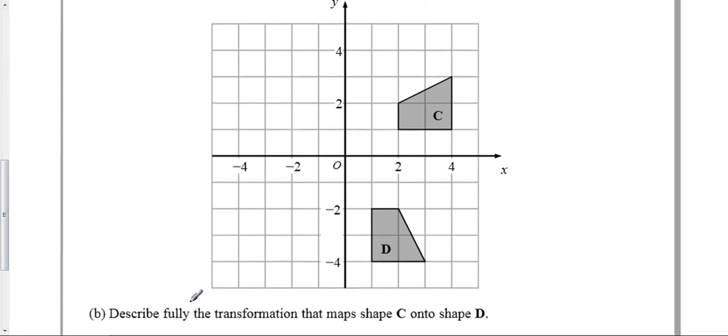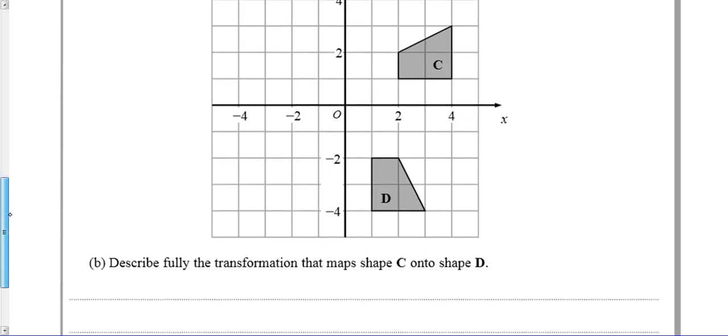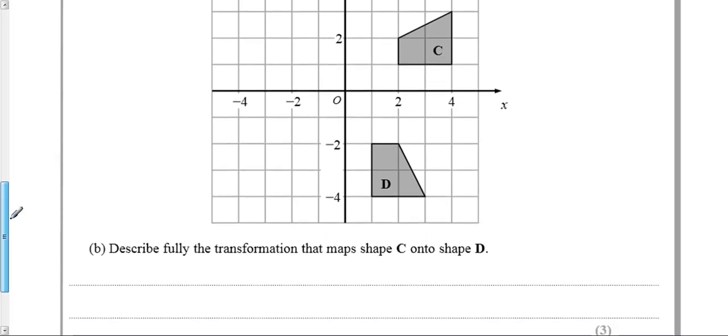Part B says describe fully the transformation that maps C onto D. Well, you can see that this has been turned. The important point here is that there are three marks available, so you've got to say three different things. To get a single mark, you've got to say rotation.